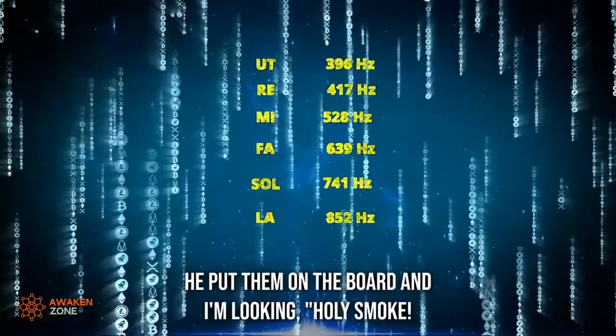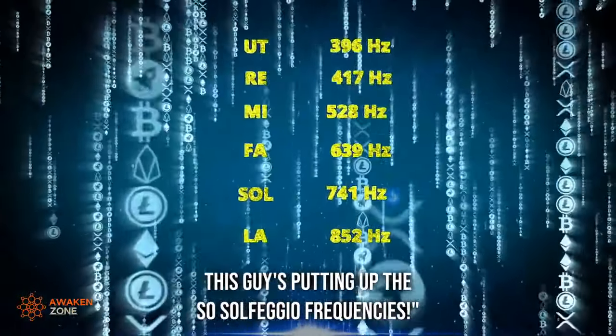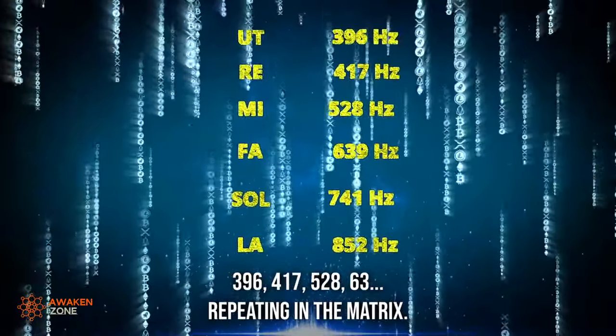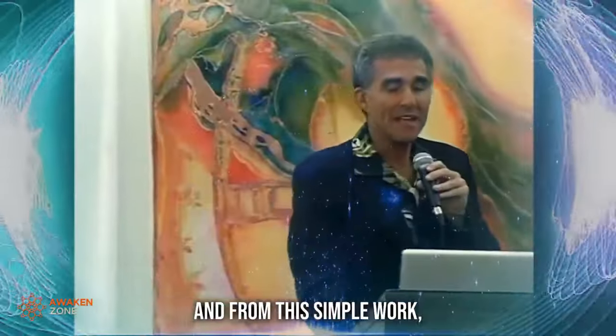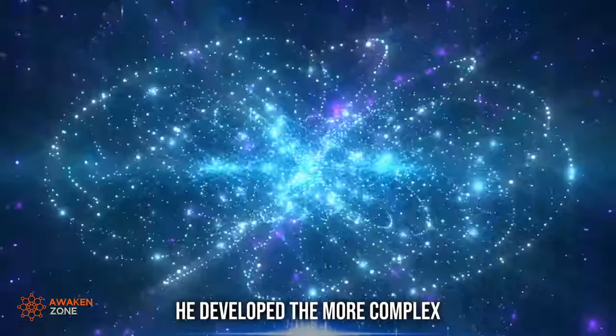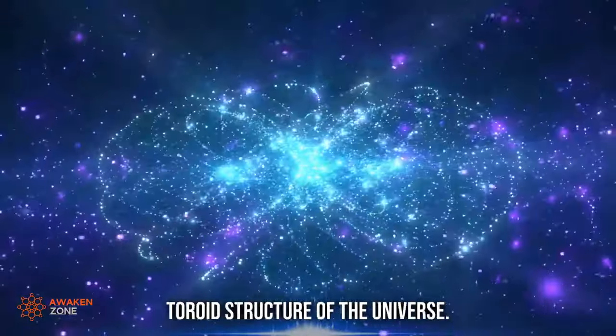And then he goes into more complex analyses where he creates the matrix of the universe. And he put them on the board, and I'm looking - holy smoke, this guy's putting up the Solfeggio frequencies: 396, 417, 528, repeating in the matrix.